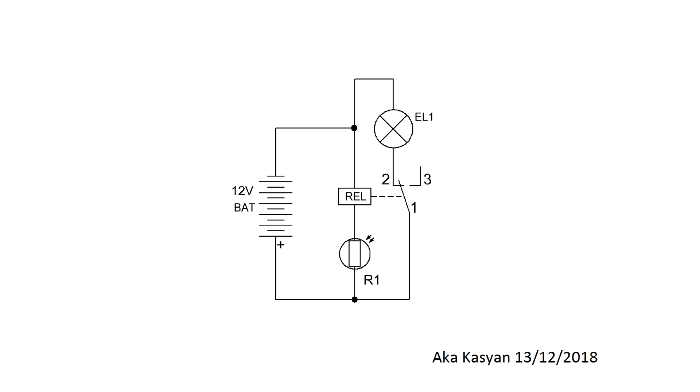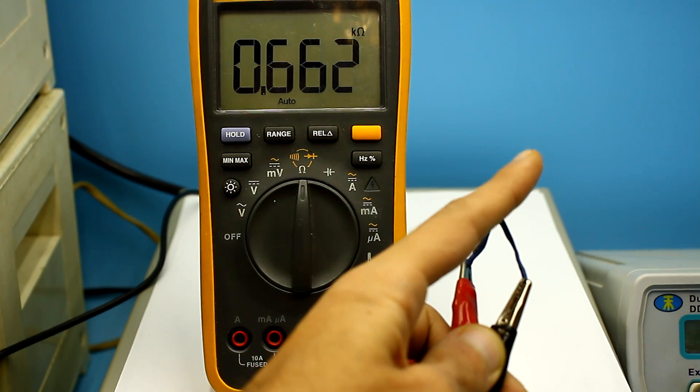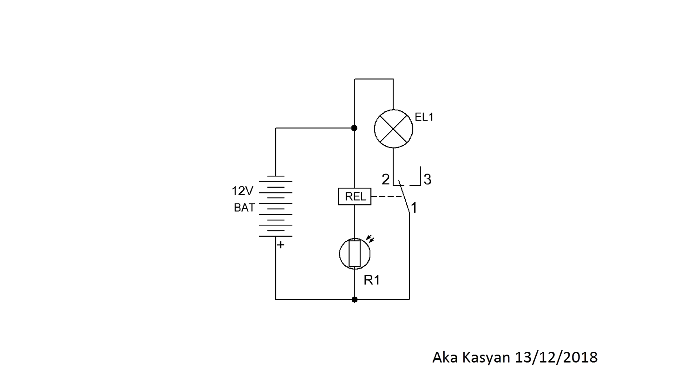It is understandable because such circuits are more practical, but the presented version also has the right to life. The photoresistor is the most common. The resistance in the dark is very big. In daylight, it drops to several hundred ohms. I think the principle of work is clear.